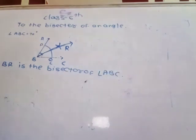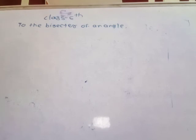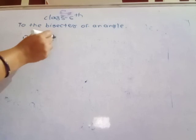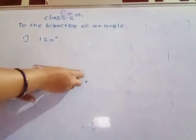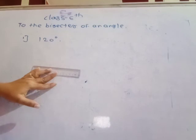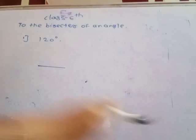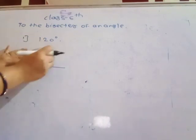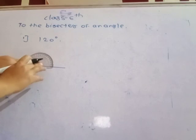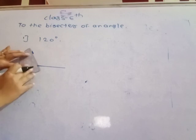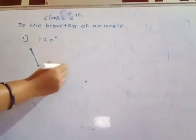Now let's do another example. Firstly, draw an angle — suppose 120 degrees. Take any length for the line segment, then keep the protractor at the starting point and draw an angle of 120 degrees. This angle is called angle DEF.